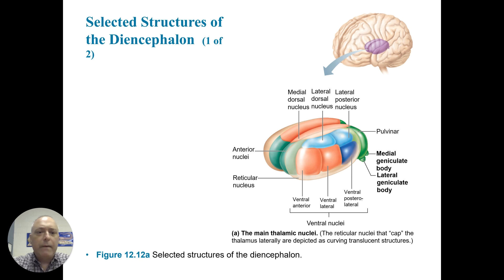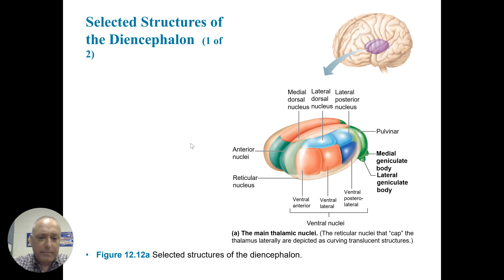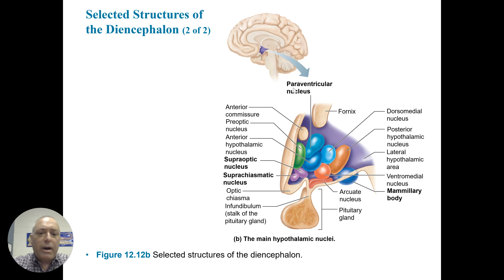The telencephalon is the end brain — that's as far as the brain gets. The next level is the diencephalon, and there are a number of nuclei that make up the diencephalon. This is very deep, but there is a medial geniculate body and a lateral geniculate body. Also paraventricular nuclei, which contains the supraoptic and suprachiasmatic nuclei, and a mammillary body. These are very complex regions deep within the diencephalon.